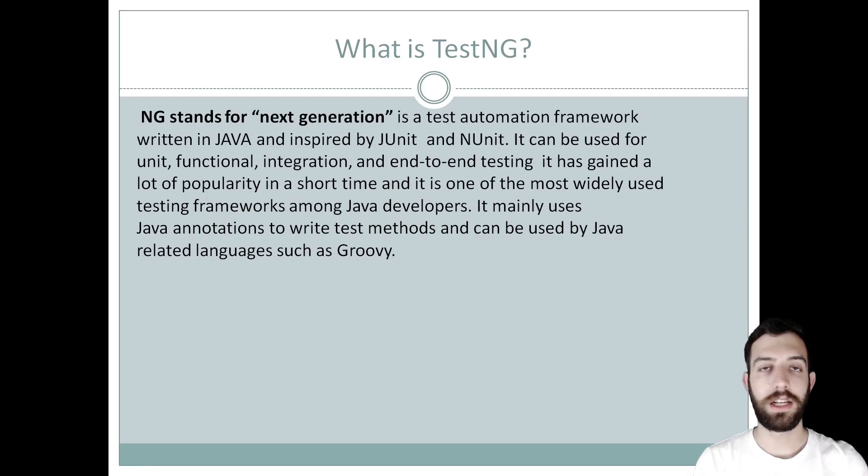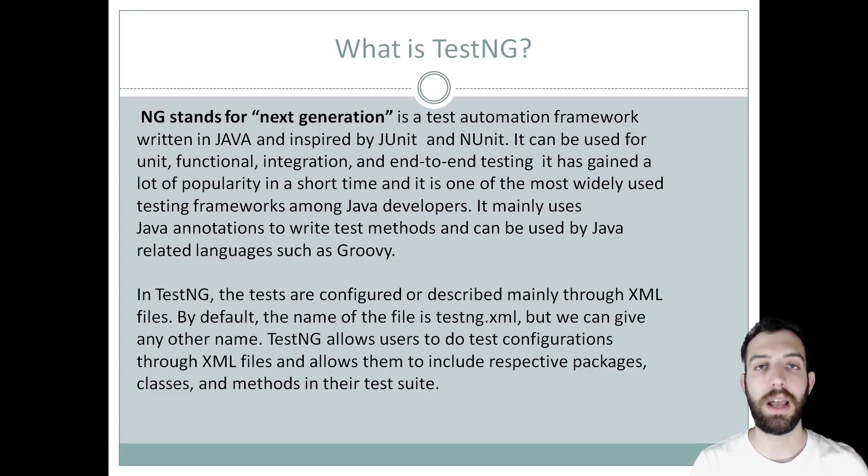TestNG where NG means next generation is a test automation framework written in Java and inspired by JUnit and NUnit. It can be used for unit integration, functional and end-to-end tests. It has gained a lot of popularity in a short time and is one of the most widely used test frameworks among Java developers. It uses Java annotations to write test methods and can be used by Java related languages such as Groovy. In TestNG tests, tests are configured or described through XML files. The default name of this XML file is testng.xml or we can give any other name if we want to. TestNG allows users to do test configurations through XML files and also allows to include respective packages, classes and methods in their test suite.